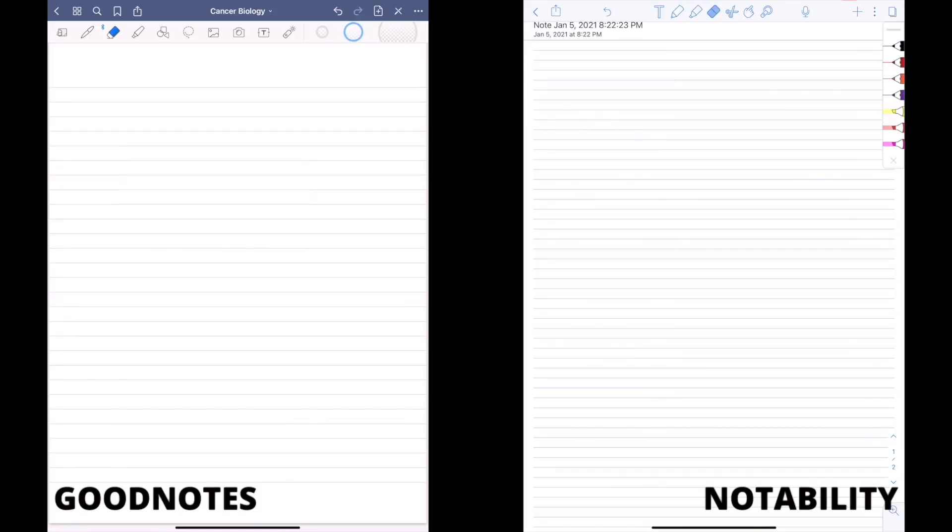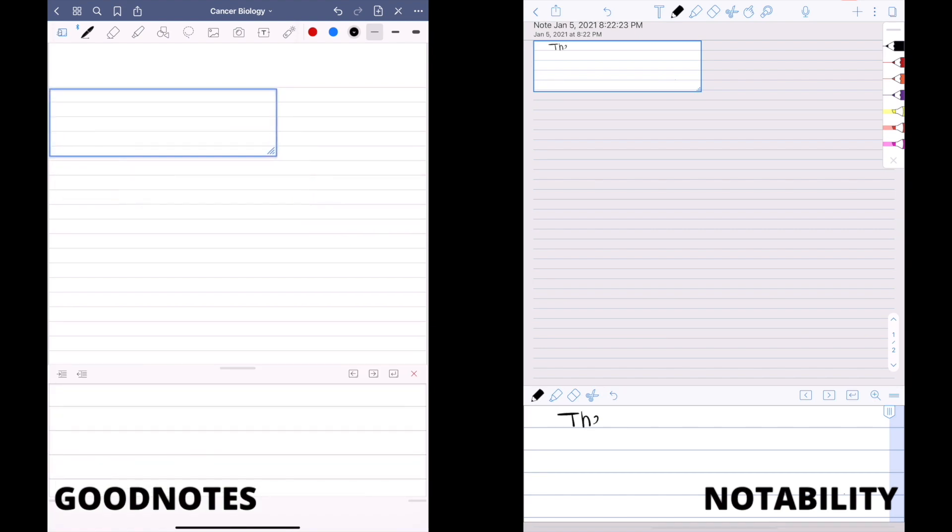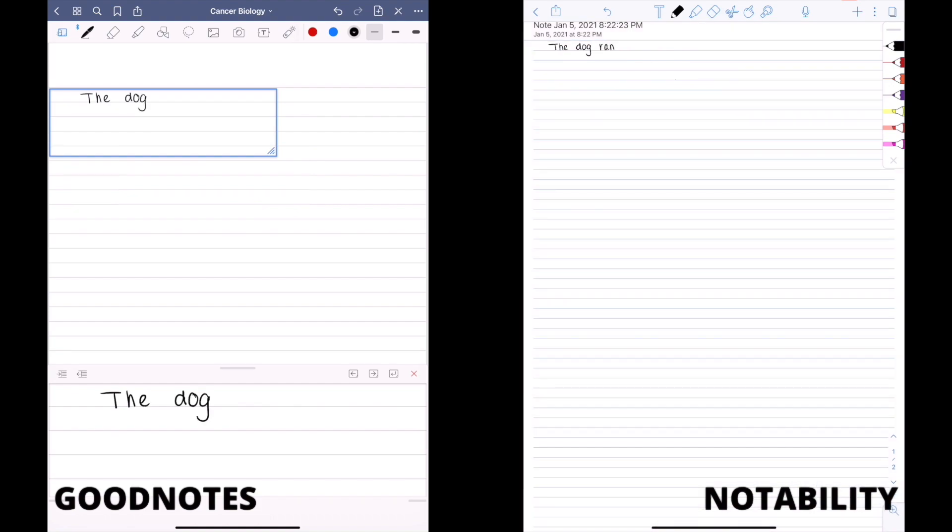The Zoom feature is available in both apps, and this is my best friend in creating very clean and neat notes. The only thing I don't like about this in GoodNotes is you can see a lag between when you're writing in the magnifying glass versus up top when it's being transcribed.